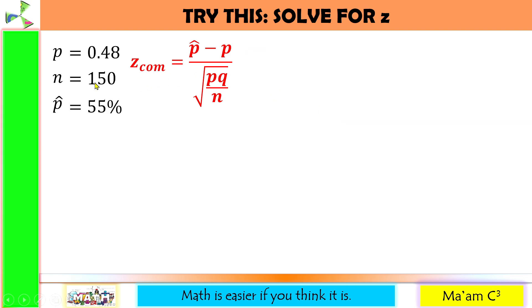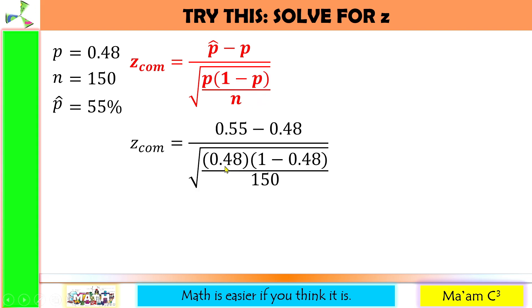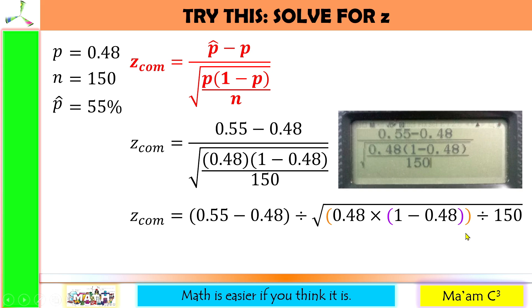Let us have another one. This time, we are only given P and N and P hat. We do not have Q. So instead of using this formula, let me replace Q by 1 minus P. Now, let us substitute. P hat is 55% in decimal, that is 0.55. P is 0.48, P again is 0.48, and then we have 1 minus our P again is 0.48, divided by our N, which is 150. Encode this into your calculator, or you may do it this way. This will give us 1.72.